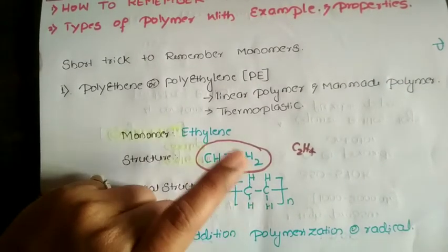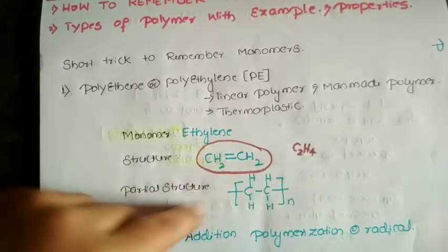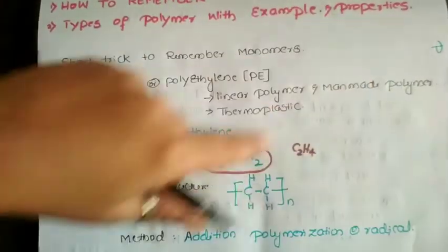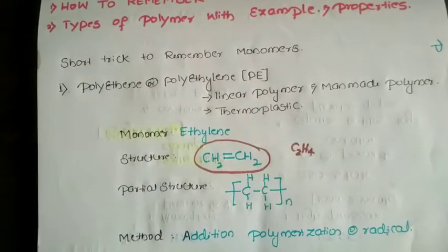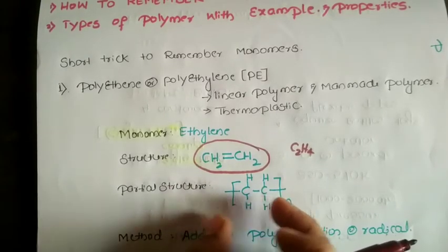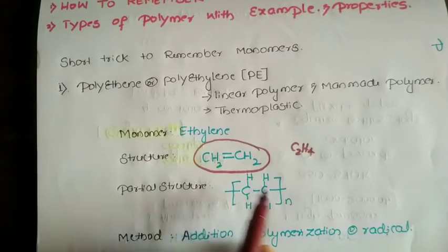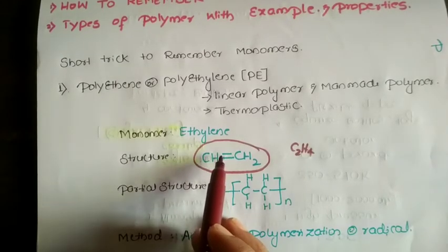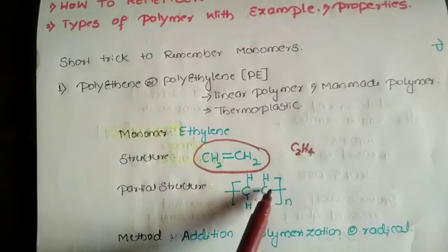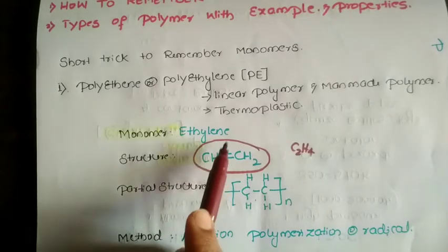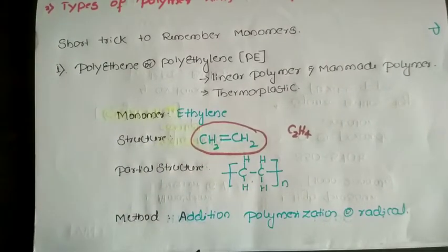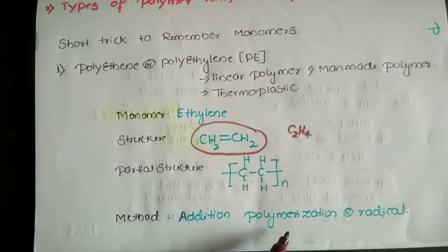The partial structure represents the entire polymer without writing it completely, since n number of monomer units undergo polymerization. The partial structure of polyethylene shows the double bond acting as a link between monomer units — the pi bond connects the next monomer unit. The method of polymerization for polyethylene is addition polymerization, also called free radical polymerization.